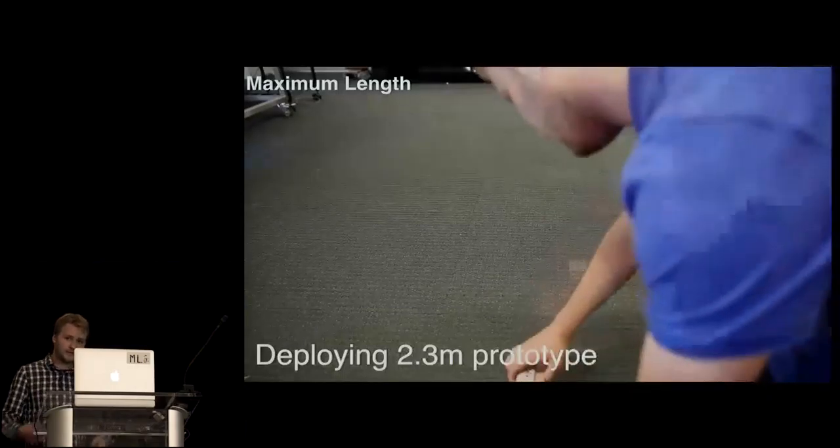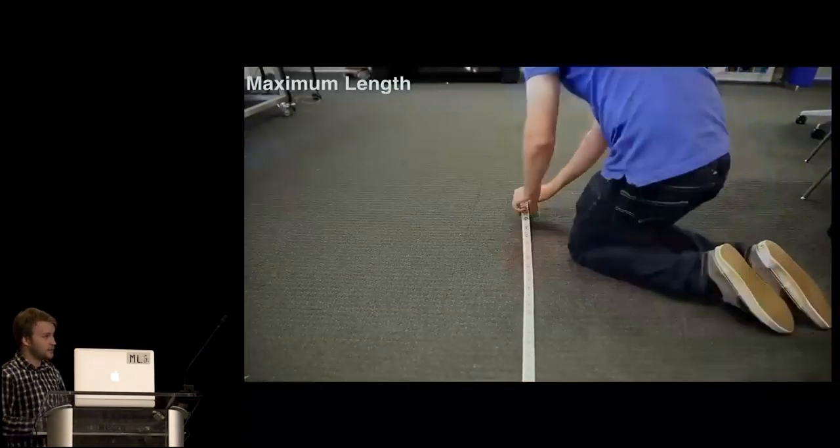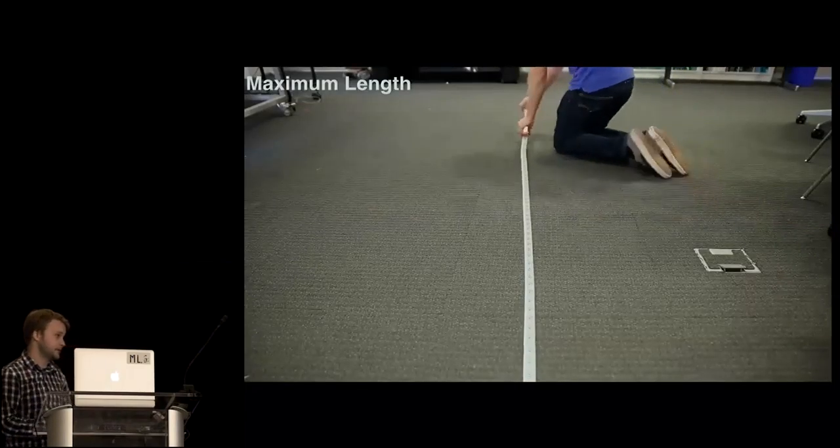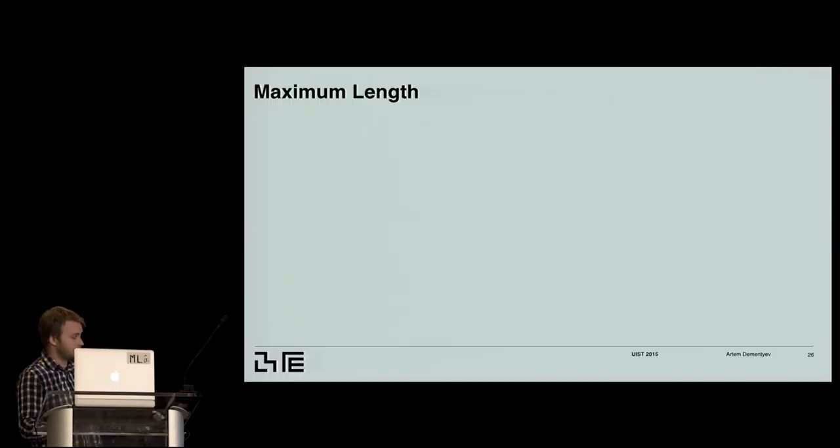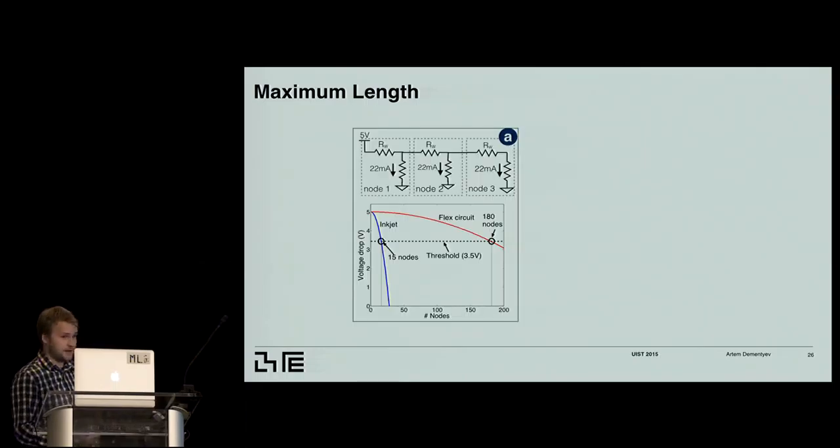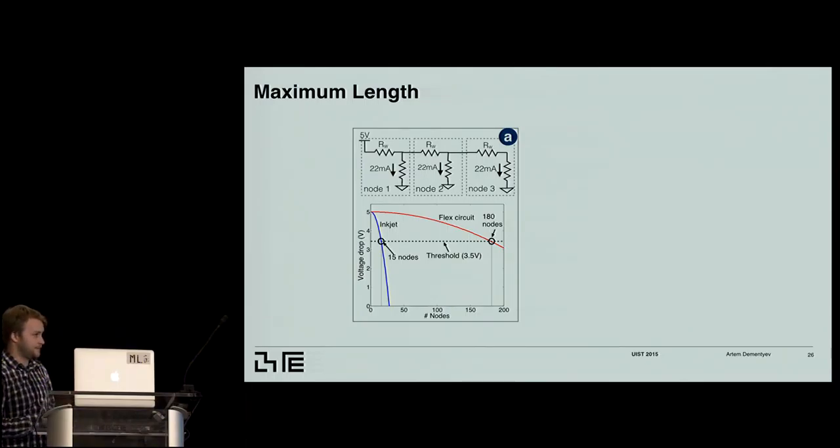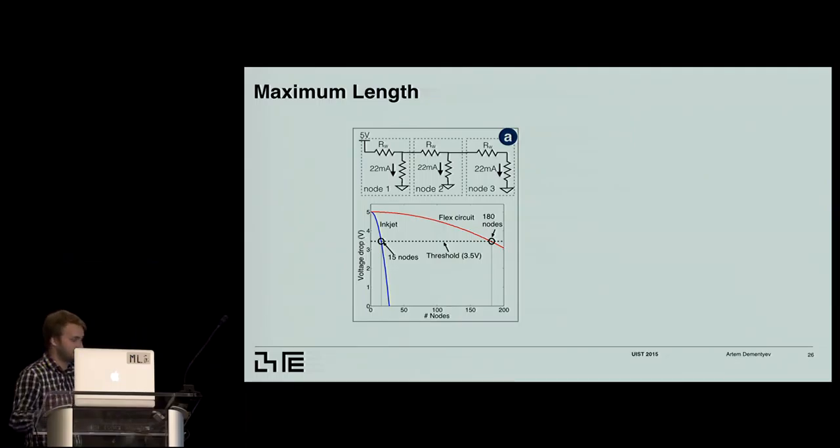So we wanted to see how long we can make this tape. So the longest we made was 2.3 meters. Here you see the prototype. And this had 66 sensor nodes. But actually that was the maximum that we manufactured, and it worked well. But we wanted to see what's the theoretical limit. And we did some calculations. And we found two main things. So the first one is the resistance of the wires. The longer the wire, the more resistance. So the power delivered to the last node will be smaller. So with this, we can make 180 sensor nodes on one bus.